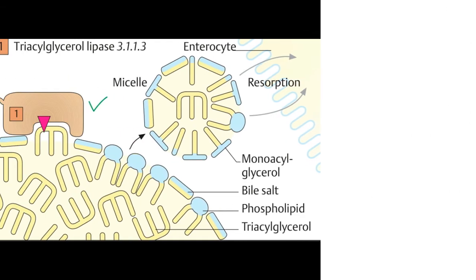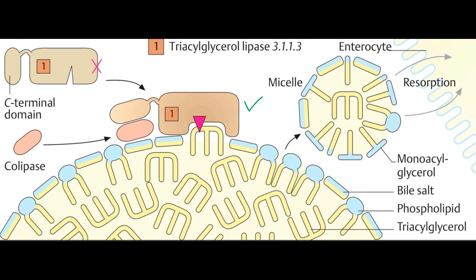Absorption of lipids by intestinal mucosal cells, or enterocytes — free fatty acids, free cholesterol, and 2-monoacylglycerol are the primary products of lipid digestion in the jejunum. These, plus bile salts and fat-soluble vitamins A, D, E, and K, form mixed micelles — disc-shaped clusters of a mixture of amphipathic lipids that coalesce with their hydrophobic groups on the inside and their hydrophilic groups on the outside. Mixed micelles are, therefore, soluble in the aqueous environment of the intestinal lumen.